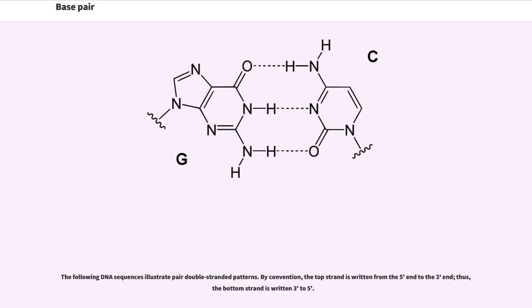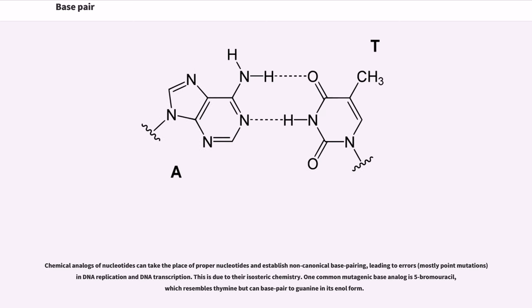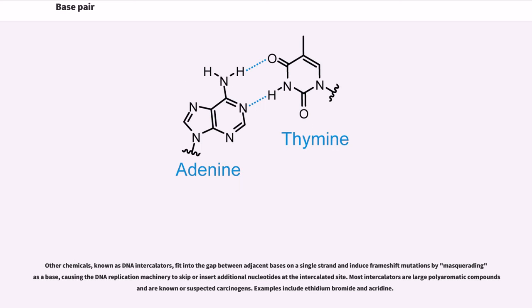The following DNA sequences illustrate paired double-stranded patterns. By convention, the top strand is written from the 5' end to the 3' end; thus, the bottom strand is written 3' to 5'. Chemical analogues of nucleotides can take the place of proper nucleotides and establish non-canonical base pairing, leading to errors (mostly point mutations) in DNA replication and DNA transcription. This is due to their isosteric chemistry. One common mutagenic base analog is 5-bromouracil, which resembles thymine but can base pair to guanine in its enol form. Other chemicals, known as DNA intercalators, fit into the gap between adjacent bases on a single strand and induce frameshift mutations by masquerading as a base, causing the DNA replication machinery to skip or insert additional nucleotides at the intercalated site. Most intercalators are large polyaromatic compounds and are known or suspected carcinogens. Examples include ethidium bromide and acridine.